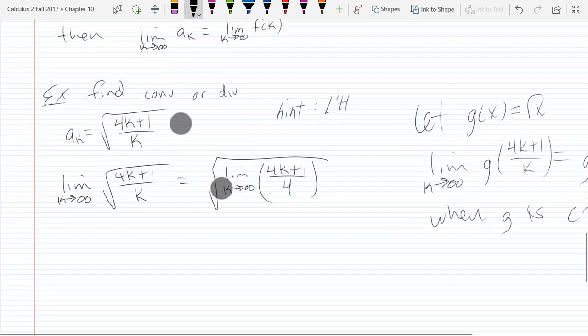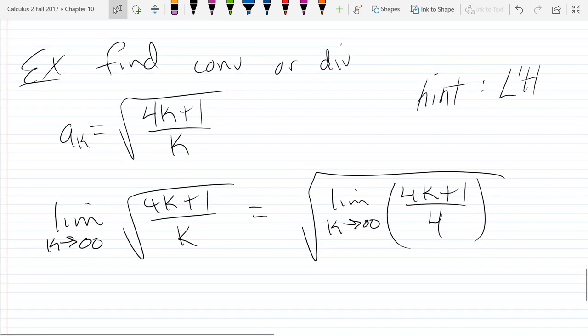What property about the square root function lets me swap the order? There is one particular property of the g function that I needed. That's exactly right. When g is continuous.